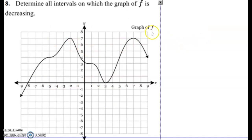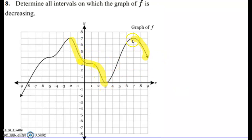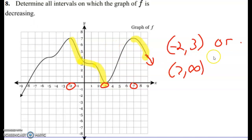Now find every area where it's decreasing — not negative, but decreasing, meaning going down. It's going down here and also going down here. So we write two intervals: from negative 2 to positive 3, and from 7 to infinity. You can write these with 'or' between them or use the union symbol. The two intervals are (negative 2, 3) and (7, infinity).